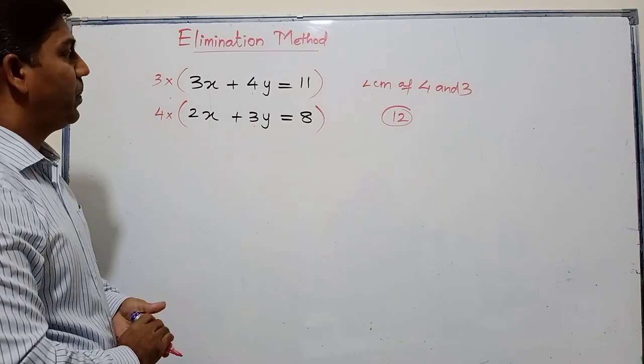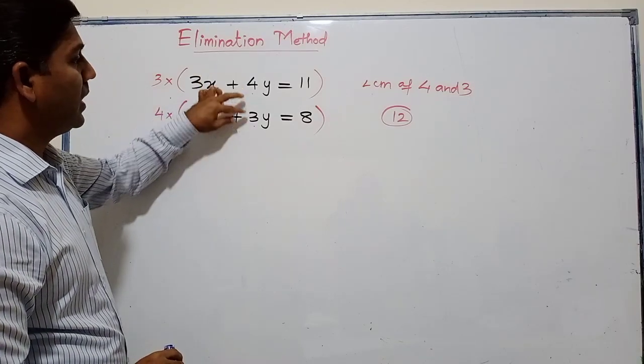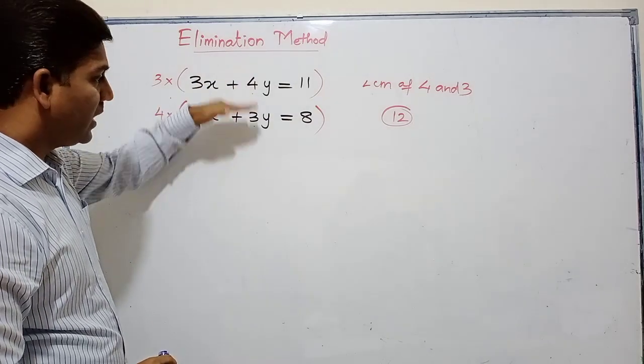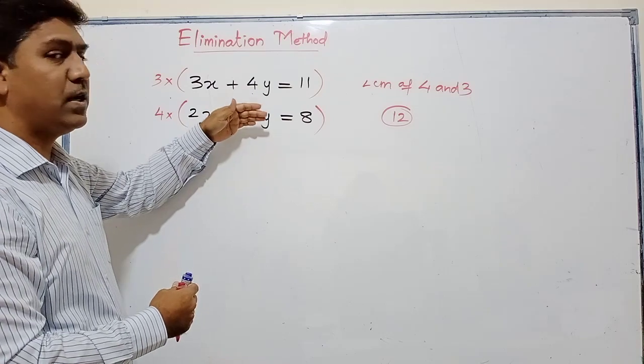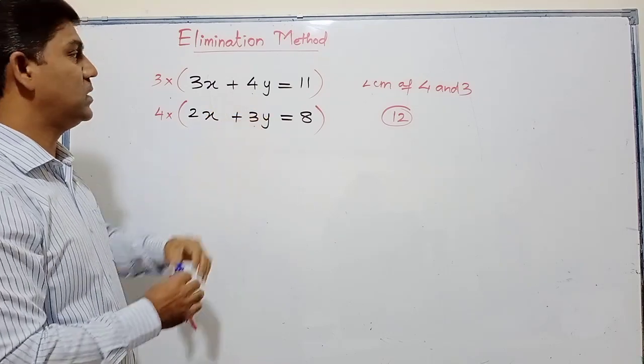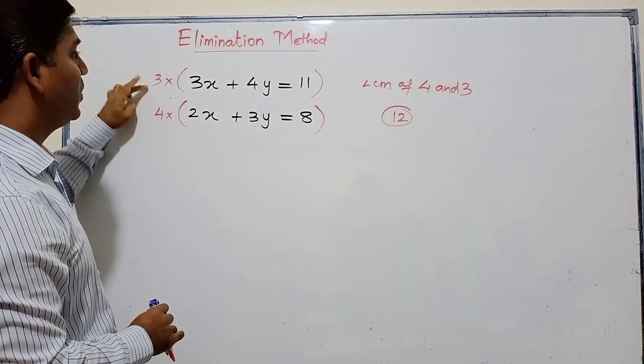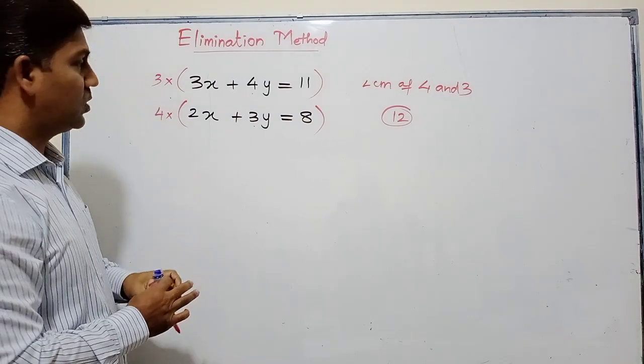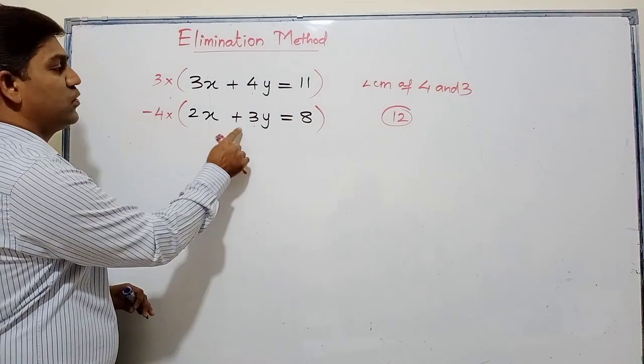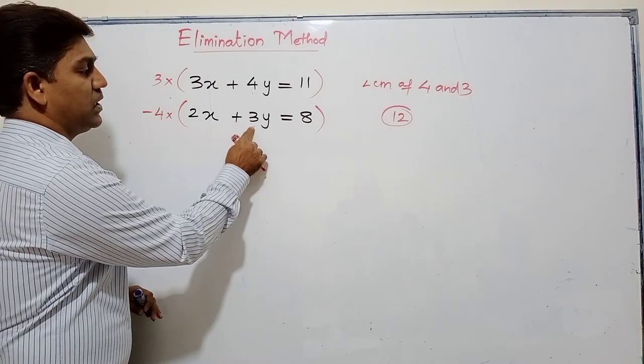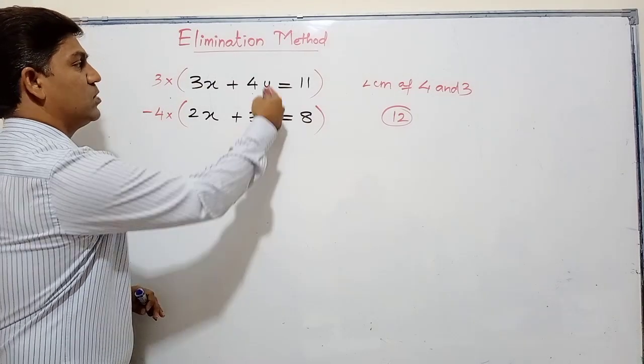Once I multiply, I'll get 12y here and 12y here. When I add, it will come down to 24y - I want to eliminate. To eliminate we need to have opposites. So I will make one of the two negative. Suppose I make the second one negative, multiply by -4. When I multiply by -4, the term 3y will become -12y, so +12 minus 12 will get cancelled.